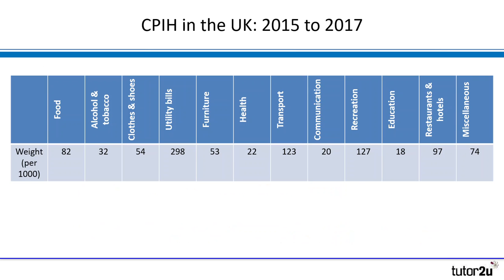We're going to take a look at the CPIH, which is one of the measures of inflation used in the UK. In this case we're going to compare prices between 2015 and 2017 in the first instance. What you can see on the screen are the ONS's specific categories that they use to categorize goods and services when calculating inflation in the UK.